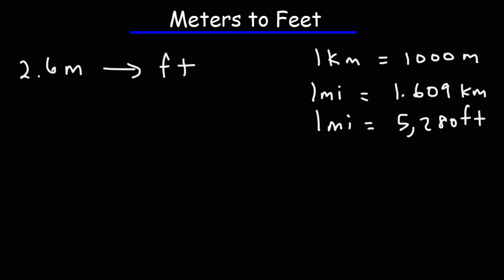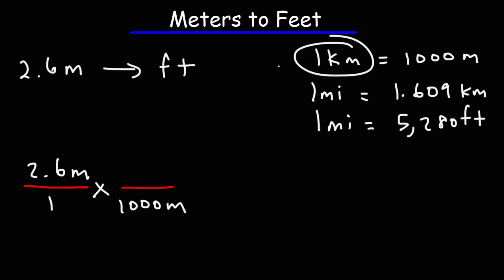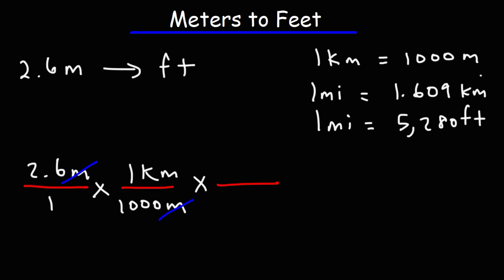Let's go ahead and begin. We'll start with what we're given: 2.6 meters over 1. In the next fraction we're going to go from meters to kilometers using this conversion factor. Because we have meters on top of the first fraction, we're going to put meters on the bottom of the second fraction so that the unit meters will cancel. Now let's convert kilometers to miles using the second conversion factor. Since we have kilometers on top, we need to put kilometers on the bottom of the third fraction so they will cancel.